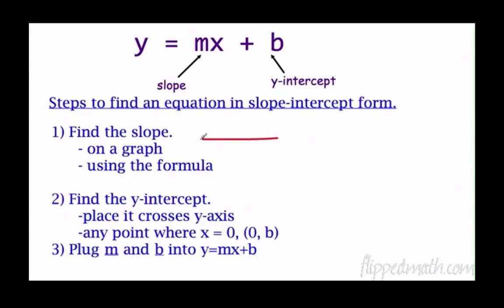To find the equation of a line in slope-intercept form, the first thing we need to do is find the slope. You can either find this on the graph or using the formula y2 minus y1 over x2 minus x1, which gives you the slope m. After we find slope, we need to find the y-intercept.